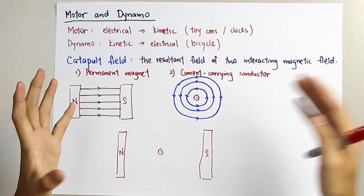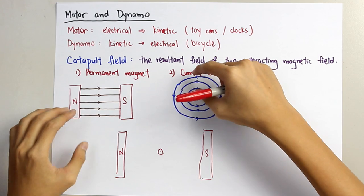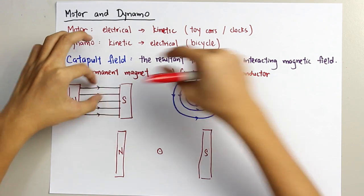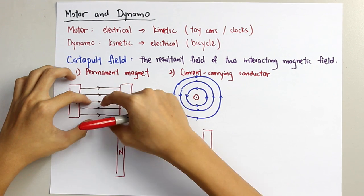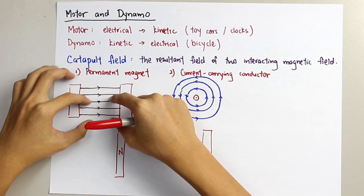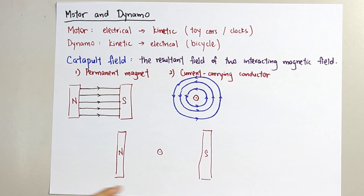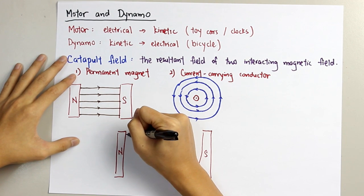The same applies to the magnetic field. In this part, the magnetic field will be weaker, and the magnetic field from this other part will be stronger. So the resulting magnetic field — which is the catapult field — will look like this.